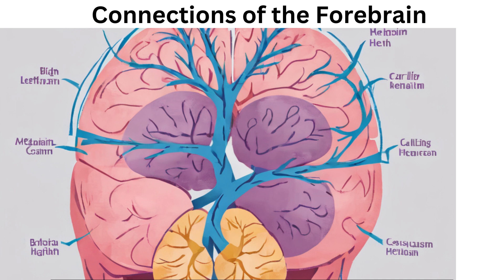The forebrain is extensively interconnected with other brain regions and receives input from various sensory and motor pathways. The corpus callosum is a large bundle of nerve fibers that connects the two hemispheres, allowing them to communicate and share information.